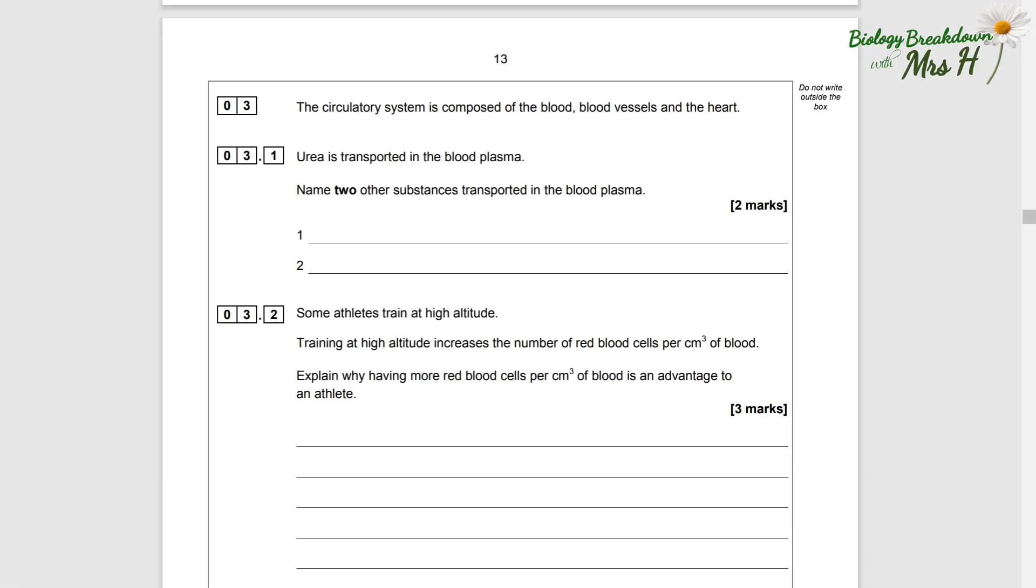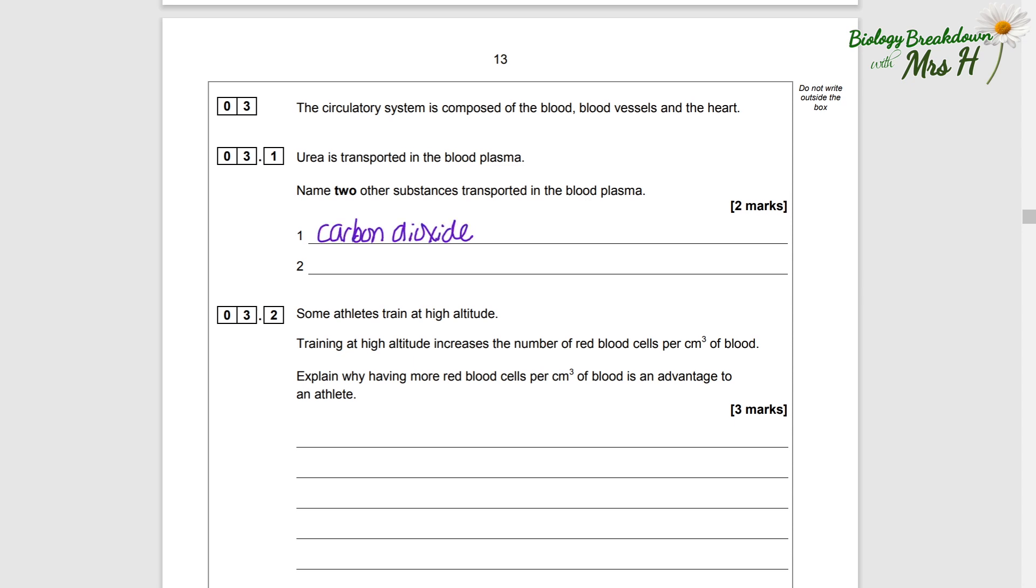Question three: the circulatory system is composed of the blood, blood vessels and the heart. Urea is transported in the blood plasma. Name two other substances transported in the blood plasma.